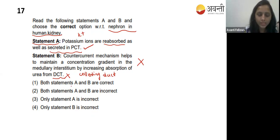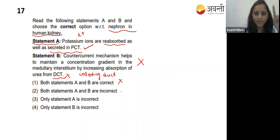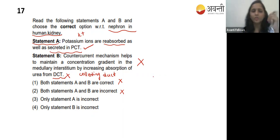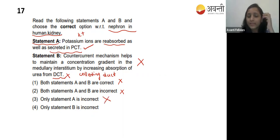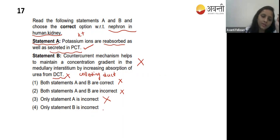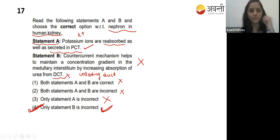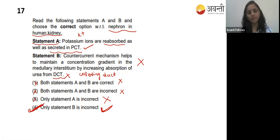Statement B - counter current mechanism helps maintain concentration gradient in the medullary interstitium by increasing absorption of urea from the distal convoluted tubule. No - urea absorption occurs from the collecting duct, not the distal convoluted tubule. So statement B is wrong. The correct answer is option four: only statement B is incorrect.